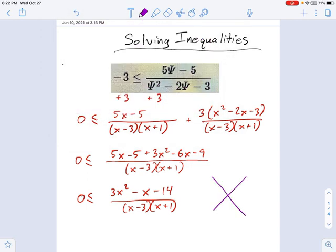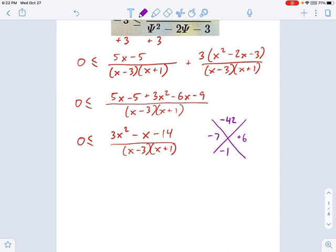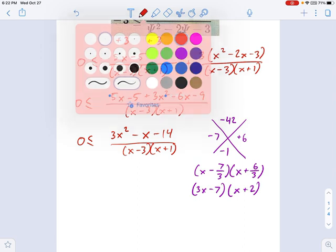I'm going to say negative 14 times 3 is 42. I think it's negative 42. And it adds up to negative 1. That's the linear term. So the numbers that I have to do here are negative 7 and positive 6. Now, when I factor this, it's going to be x minus 7 over 3, since 3 was the term in front of the x squared. And x plus 6 over 3, the x plus 6 over 3 simplifies. That's going to be x plus 2. But the one on the left does not simplify, so that's going to be 3x minus 7.